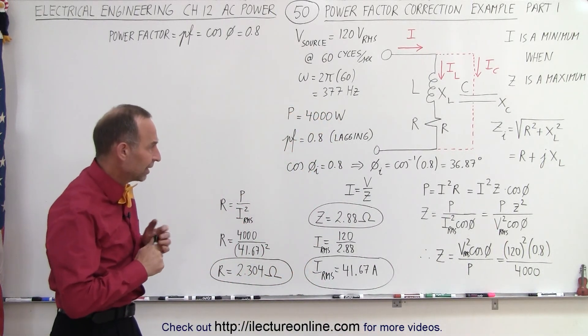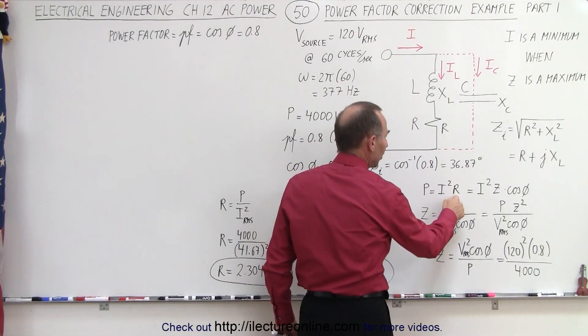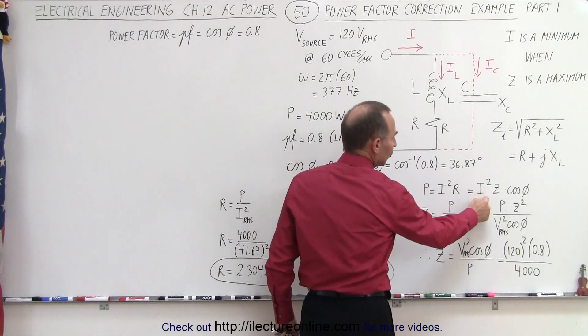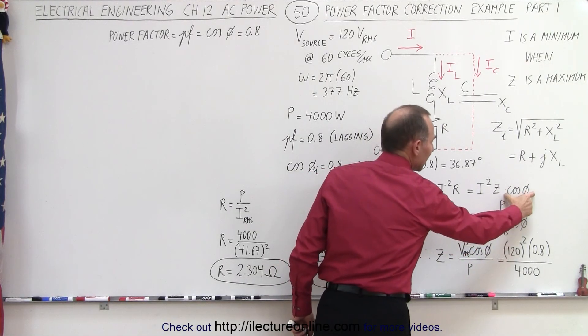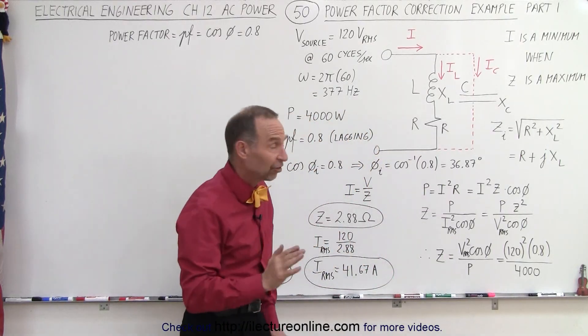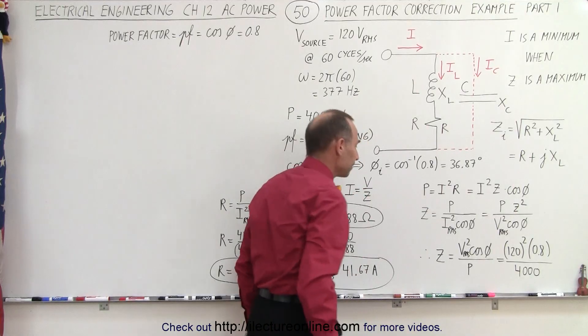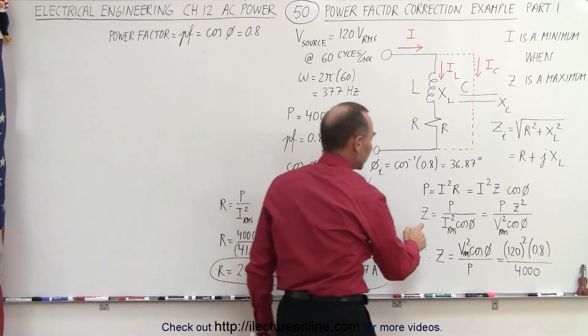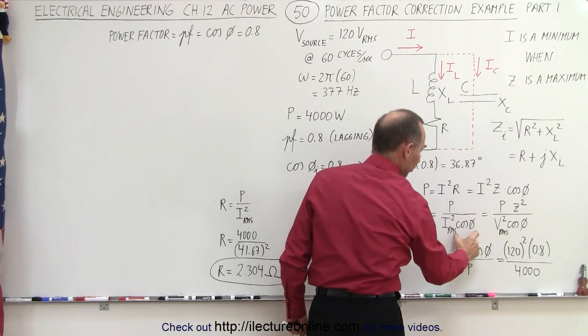And so what we can see is that the power is I squared times R, which can also be written as I squared times Z times the cosine of phi. That would be the impedance times the power factor equals the resistance in the circuit. And of course, this is before we have the capacitor, so I sub L is equal to I. Then we can calculate the impedance by taking the power divided by I squared times the cosine of phi.